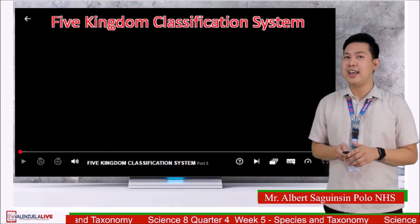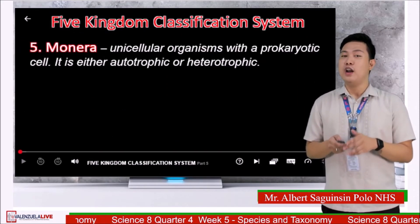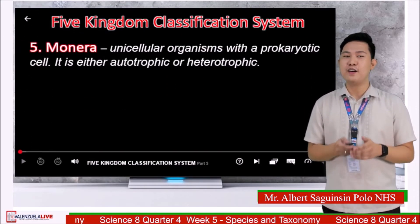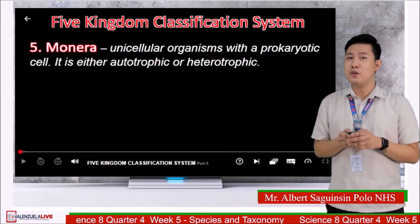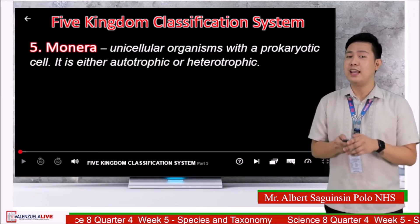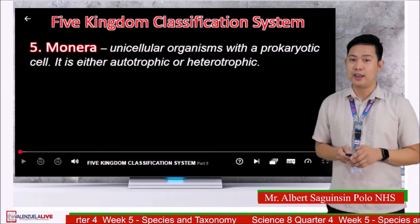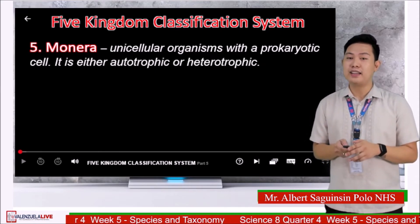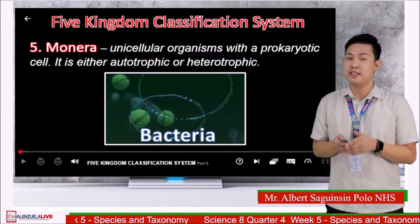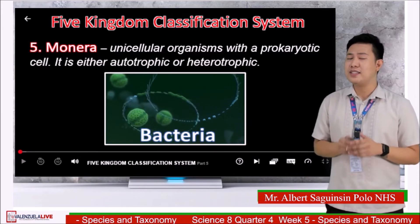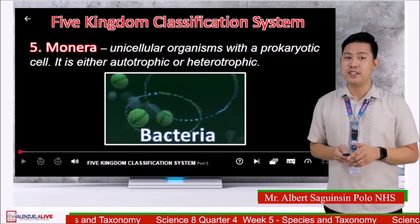Last is kingdom Monera — unicellular organisms whose cells do not have a true nucleus. They can be either autotrophic or heterotrophic. Some bacteria can produce their own food using chemical substances, while some rely on others for food and nourishment.